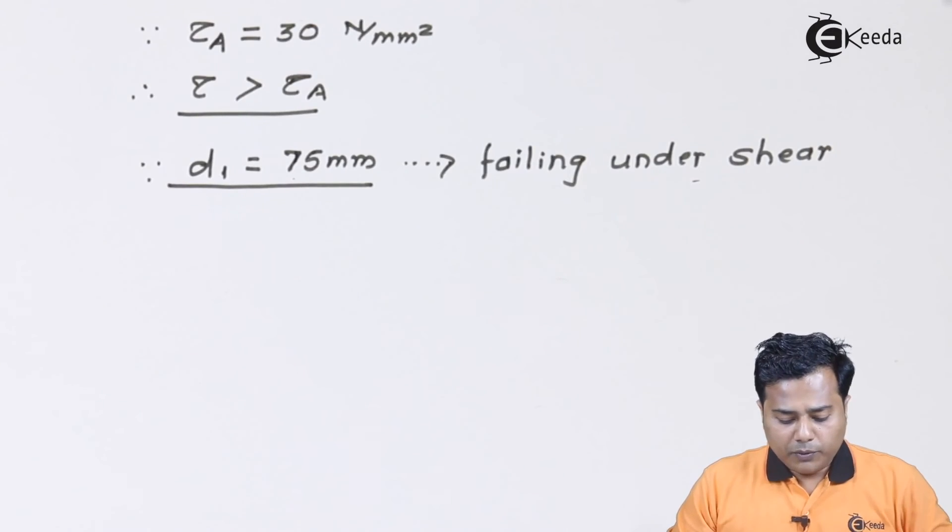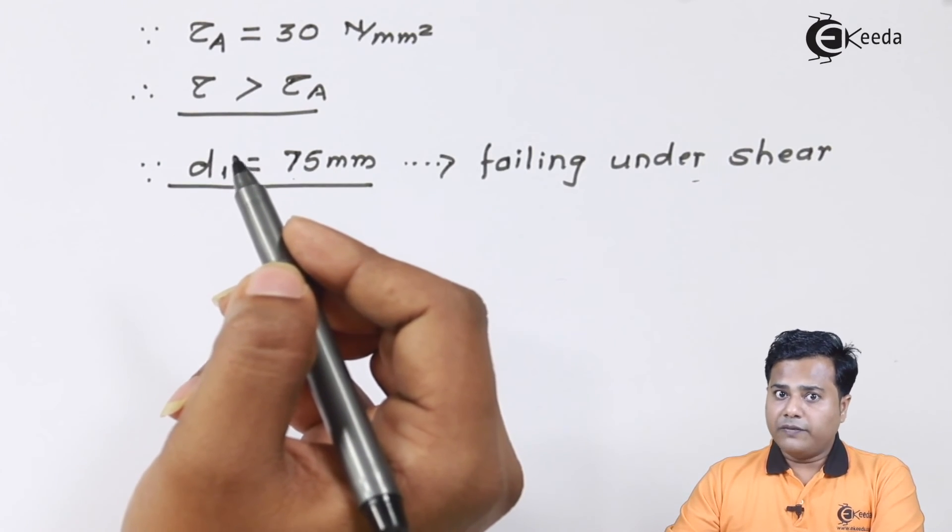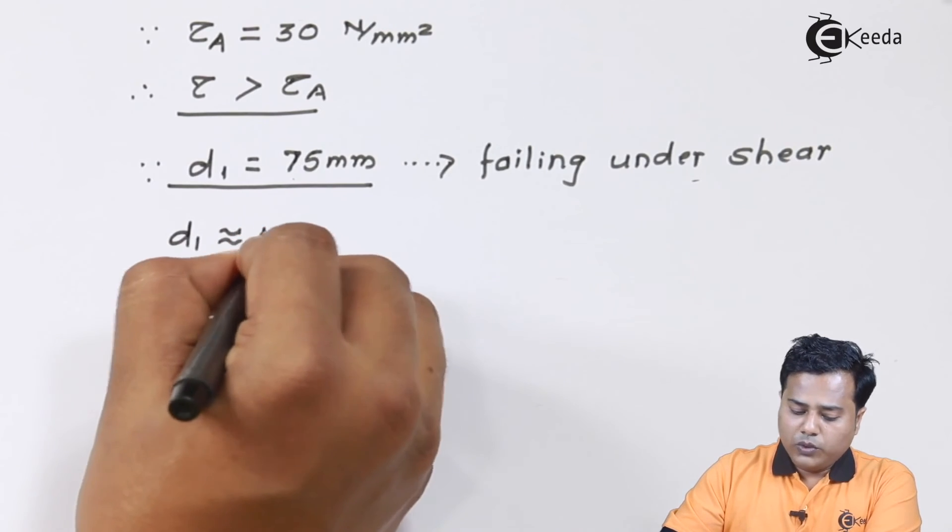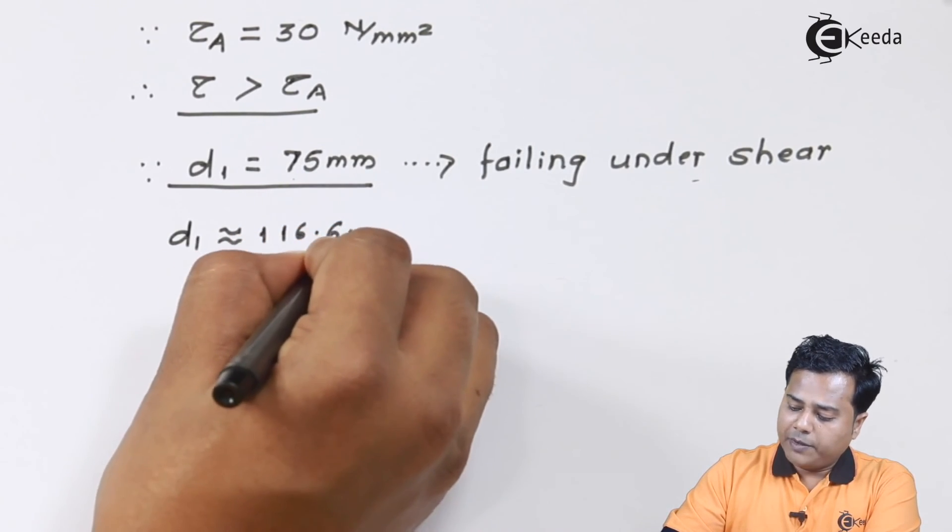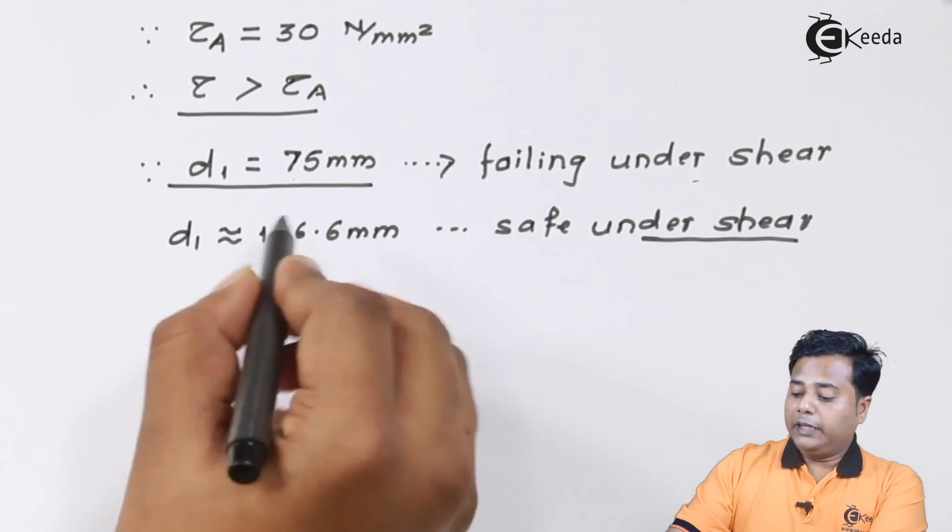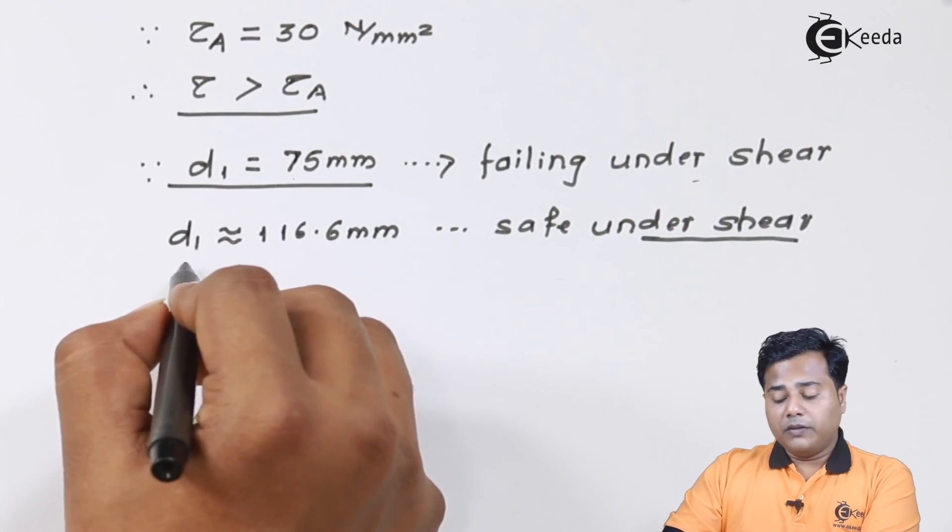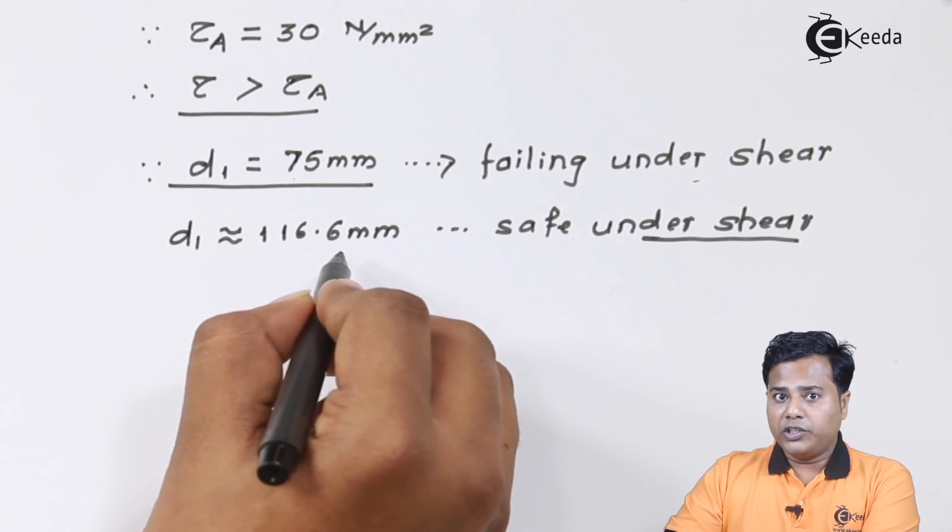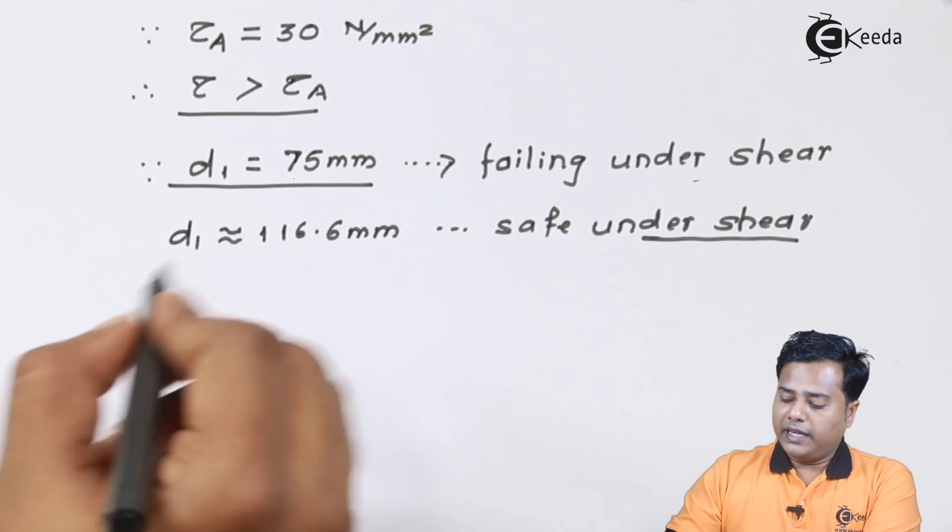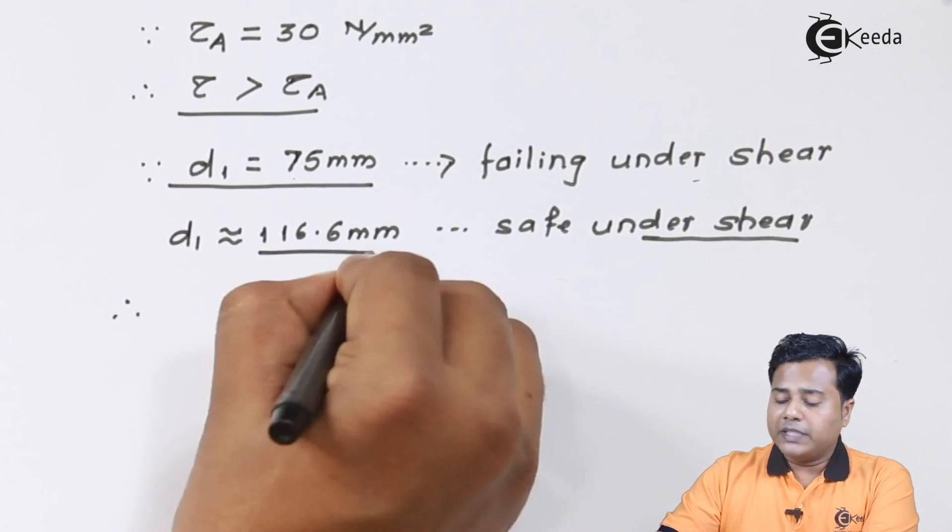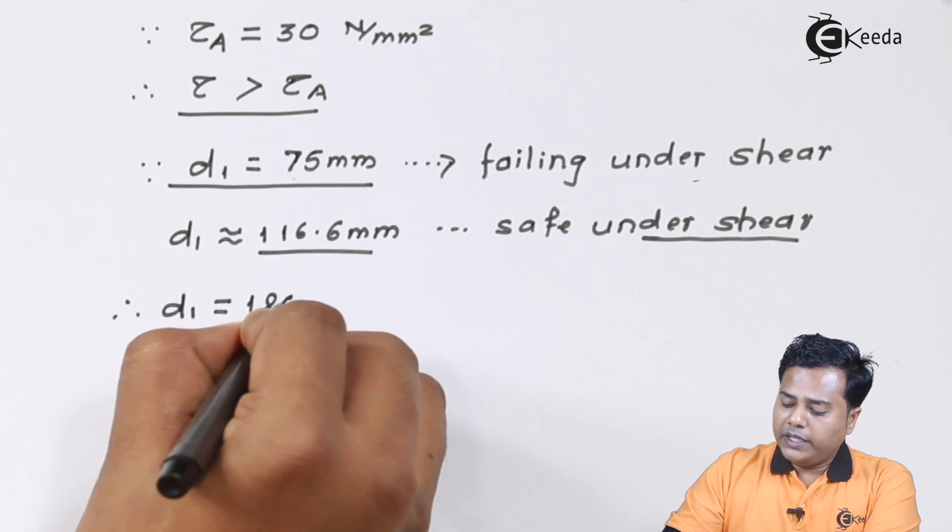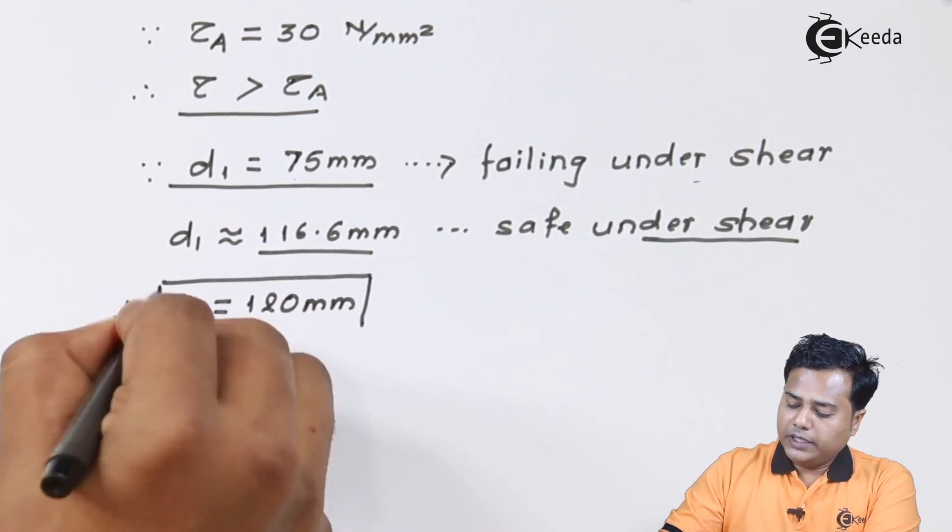I have already performed the calculation from my side. The diameter that I have got is somewhere equal to 116.6 mm, safe under shear. That means all the values of diameter which are smaller than this will not be safe under shear. Let's go for a preferred series: d₁ will be equal to 120 millimeter.